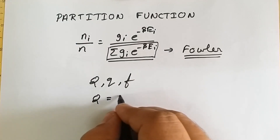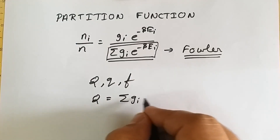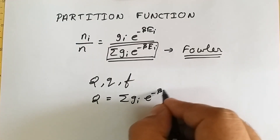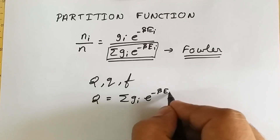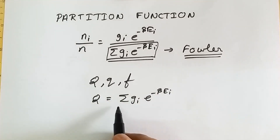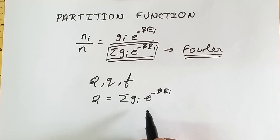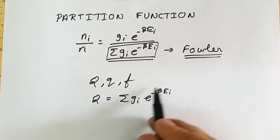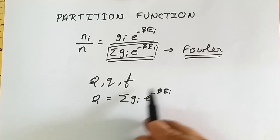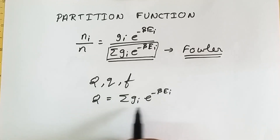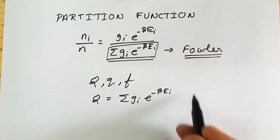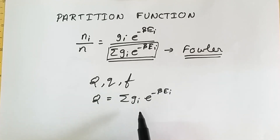So Q is equal to summation of g_i times e raised to minus beta epsilon_i. This term — summation g_i e raised to minus beta epsilon_i — is called the partition function. This partition function gives the summation of the energy states over all available states.